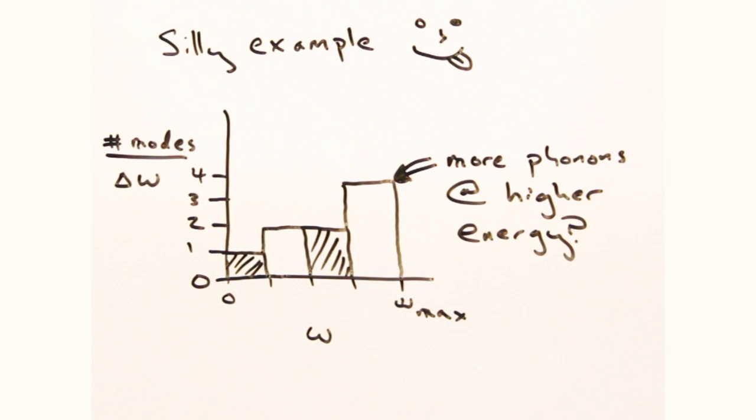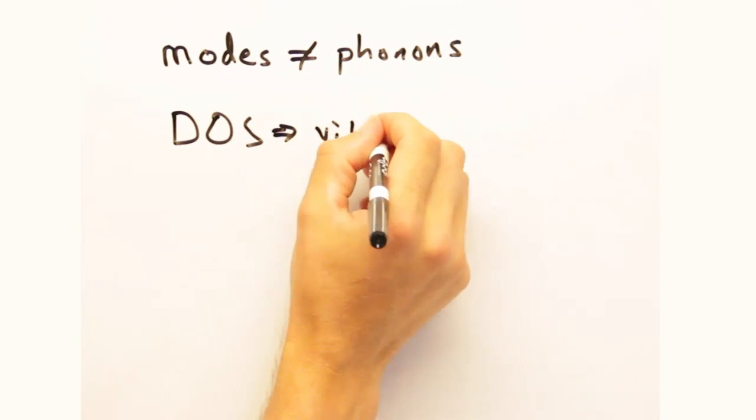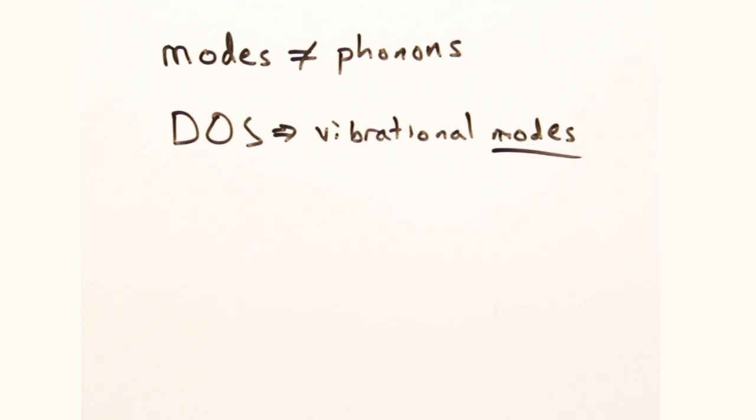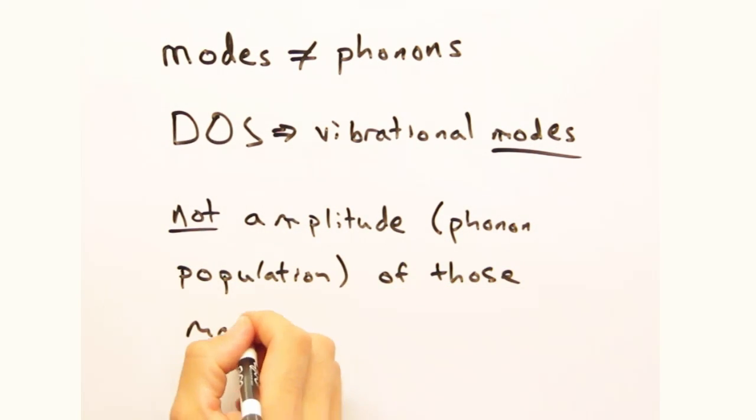Careful here. We never said anything about the population of phonons. The density of states describes how many modes are at a particular energy level. It's completely independent of how many phonons exist in these particular modes.